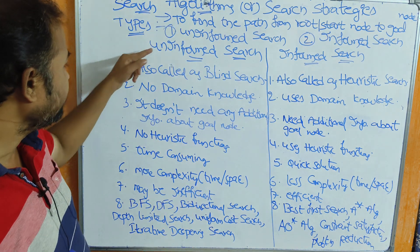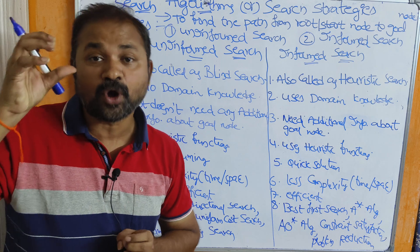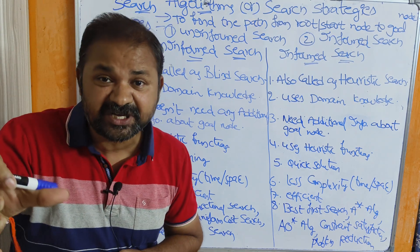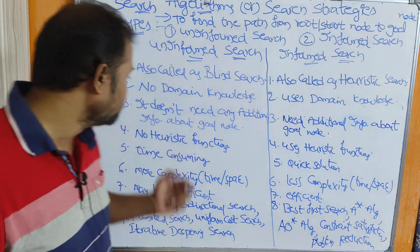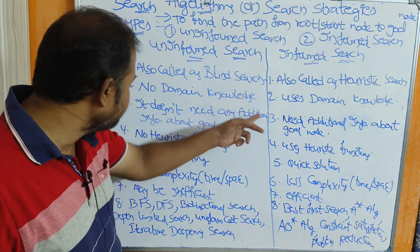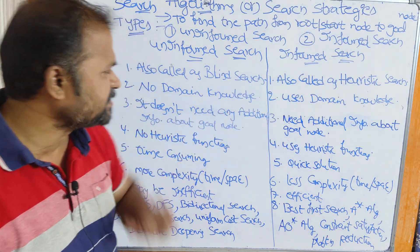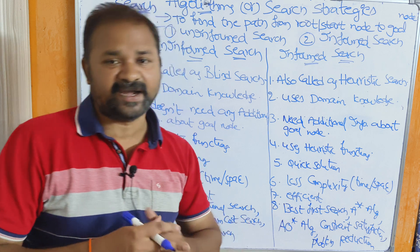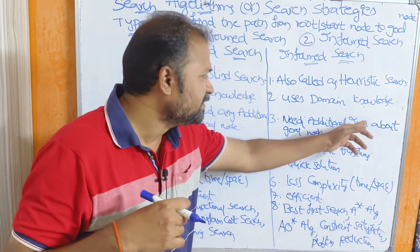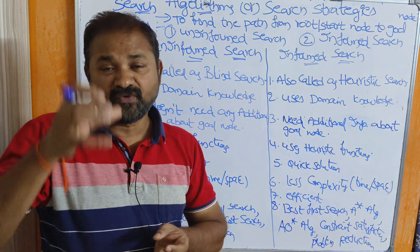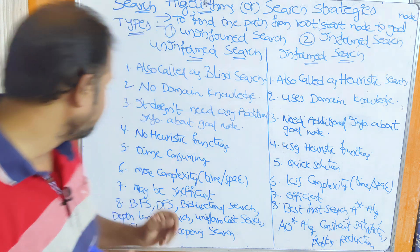The second point: in the uninformed search technique, no domain knowledge is needed. Domain knowledge means additional information about the goal state — it doesn't need any additional information about the goal state. Whereas in the informed search technique, domain knowledge is required, meaning it needs additional information about the goal node, such as the cost from that node to the goal node.